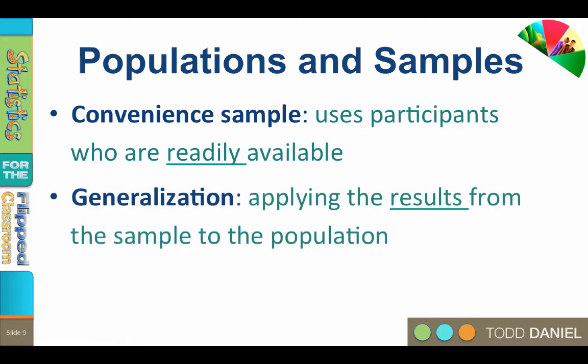This is not necessarily a bad practice, but we should be honest with ourselves about what we are doing. Before we begin generalizing the results from our convenience sample to the population, we should replicate the same study at other universities with other college students to see if others find the same results. Most research in the behavioral sciences is done using convenience samples.